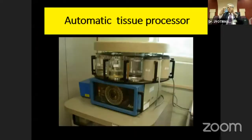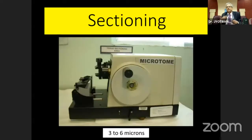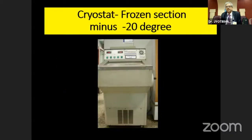We use an automatic tissue processor, which takes about 24 hours for tissue processing. Then paraffin wax embedding is done at 60–68 degrees centigrade to produce the paraffin block. The paraffin block is then sectioned into three to six micron thickness tissue sections.